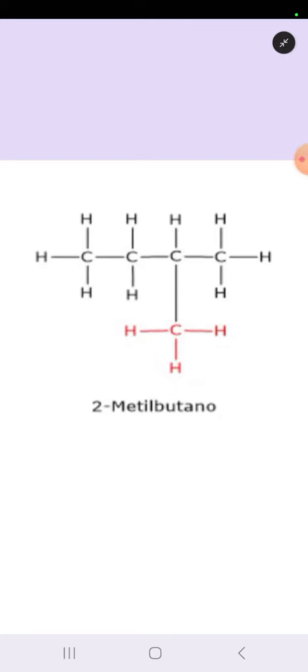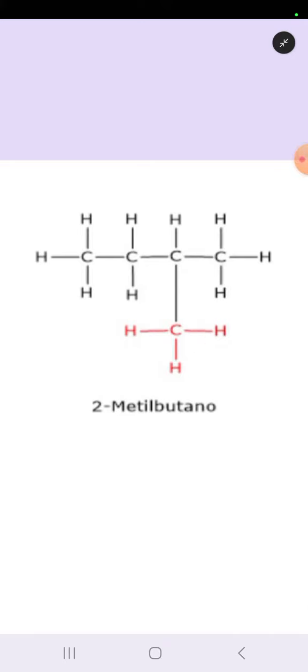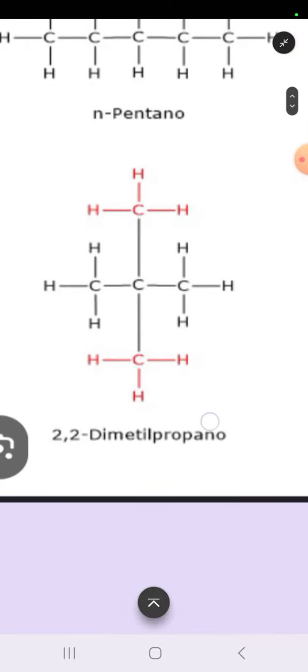In iso-pentane, you can see that four carbon atoms are arranged in a straight chain, but the fifth one is forming a branch along the chain. A third structure is also possible that will have three carbon atoms arranged in a straight chain and two carbon atoms forming branches along the chain.